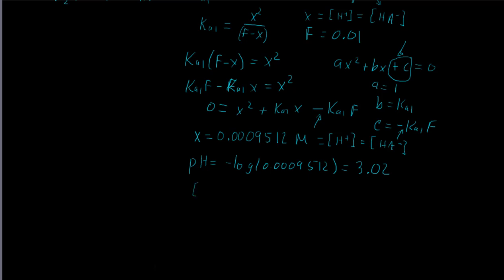Now let's calculate the concentration of H2A — the undissociated acid remaining in solution. We started with 0.01 mol/L and it equals F minus x, so 0.01 minus 0.00095 gives approximately 0.00905 molar.